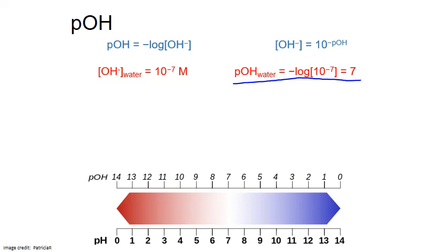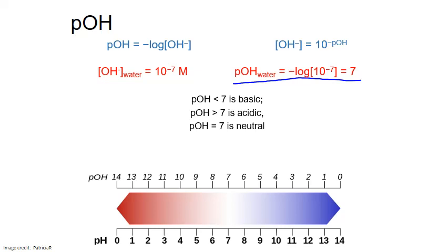In general, pOH values run in the opposite direction of pH values for any given solution. pOH values less than 7 indicate a larger concentration of hydroxide and a smaller concentration of hydronium — these are acidic solutions. When the concentrations of hydroxide and hydronium are equal, as in distilled water, both pH and pOH equal 7 and the solution is considered neutral.